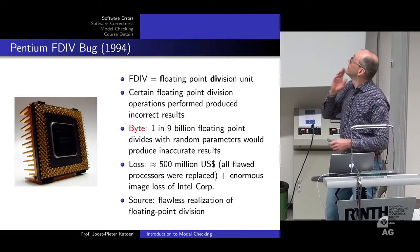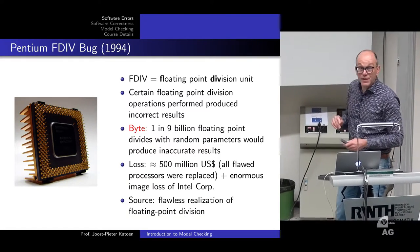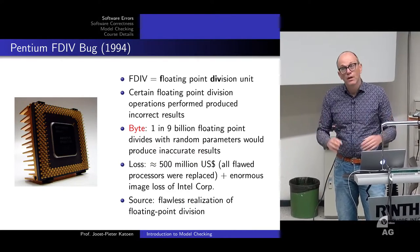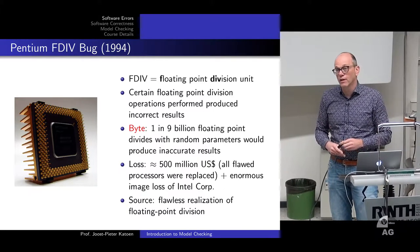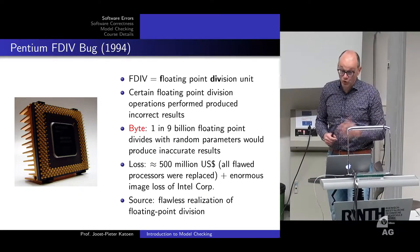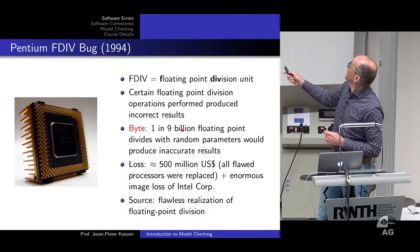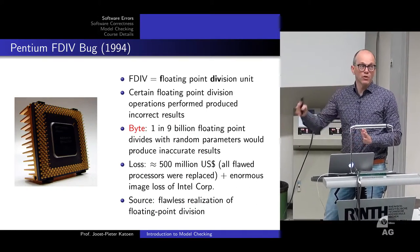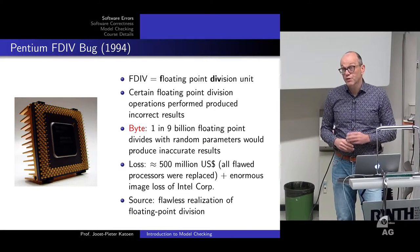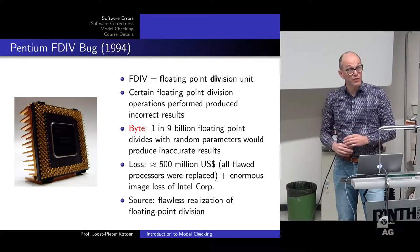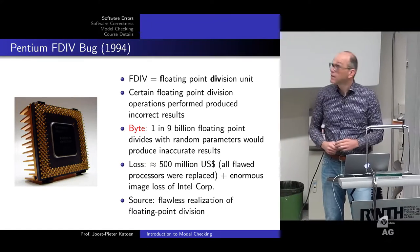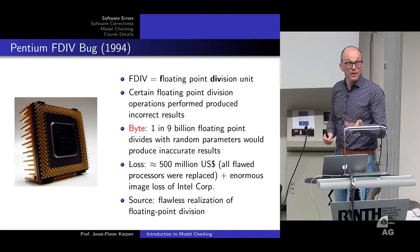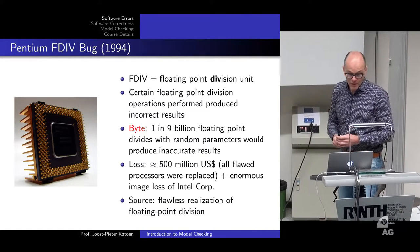There was also a hardware bug in the Pentium floating-point division unit. Some people doing floating-point division operations found that one in nine billion floating-point divide operations produces inaccurate results. It took a very long time before this bug was found. Once found, Intel had to recall all those microprocessors and replace them — an enormous cost of about 500 million euros/dollars, plus an enormous image loss, which is even more severe for such a company.